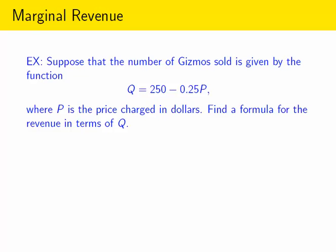Here's an example. Suppose that you can predict that the number of gizmos sold will depend on the price according to this formula. Notice that if you increase P, you're going to decrease the quantity sold. That makes sense. If you increase the price, fewer people will buy them probably.